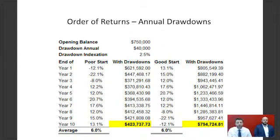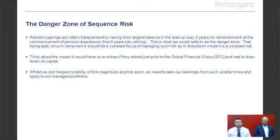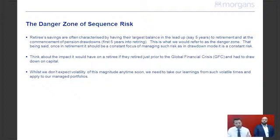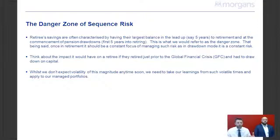Today's topic is about other ways to manage that risk. The danger zone for sequence of returns risk is that a member's account balance is often the largest in the five years leading up to retirement and the first five years of retirement — because they're contributing right up to retirement and haven't drawn down any pension yet. That's what we call the danger zone. This should be a constant focus on managing such risk in retirement, particularly in drawdown or pension phase.